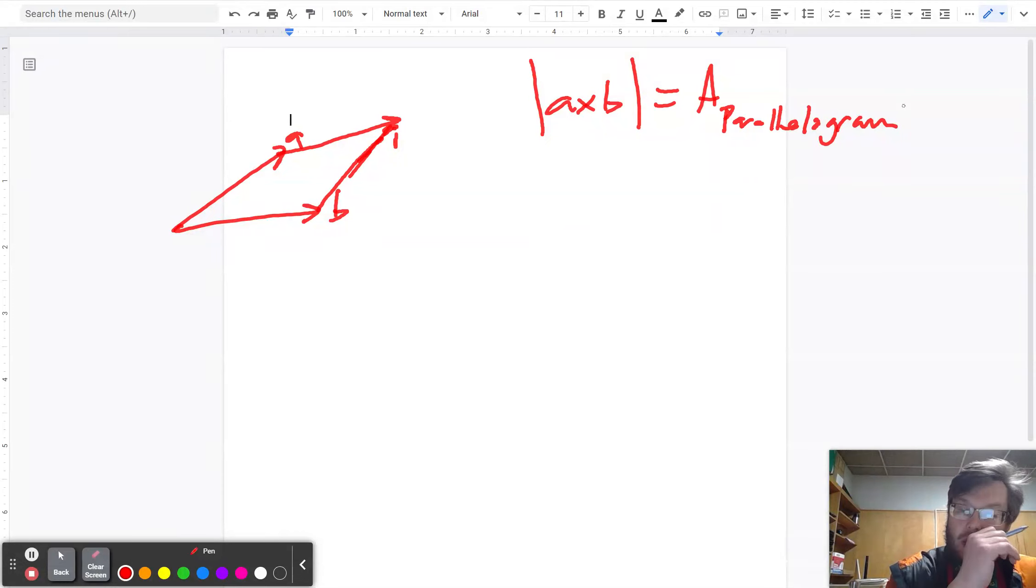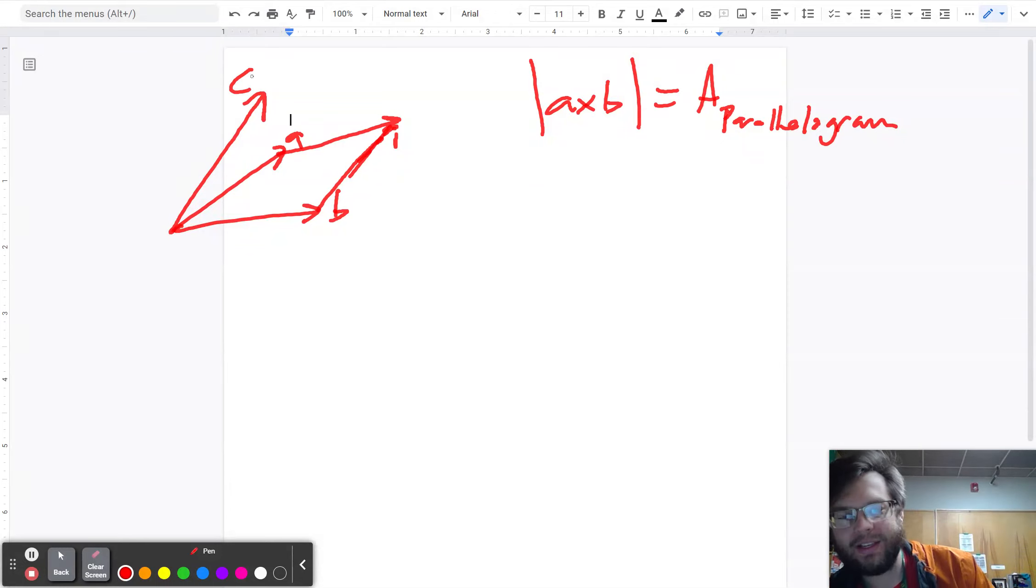What if we have a third vector, and we'll call that third vector C, and we would like to actually form a parallelopiped? So now we're talking about forming a three-dimensional thing.